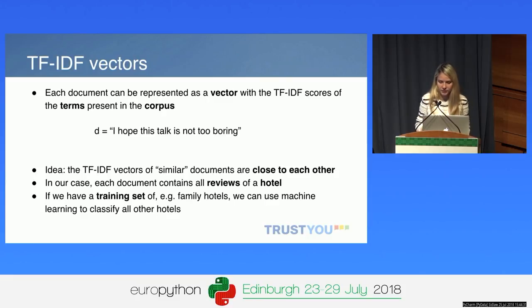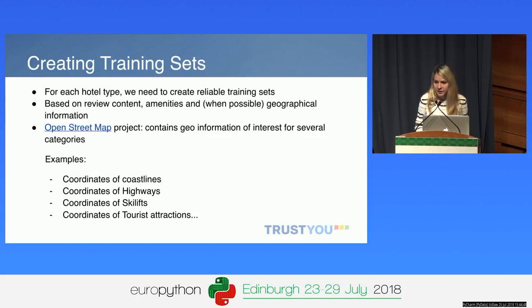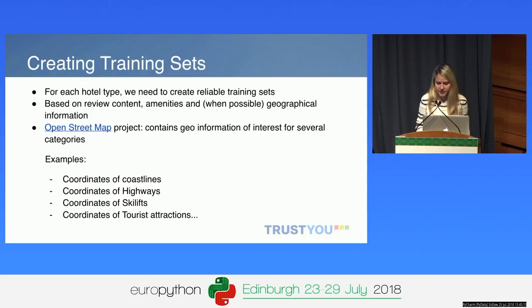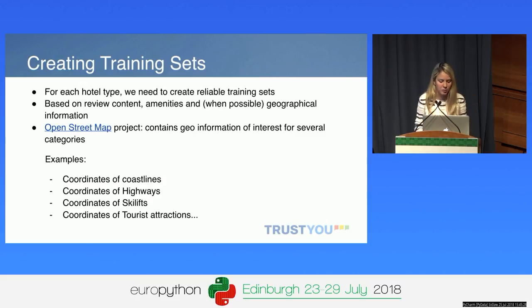The idea is that if we have a training set — a set of hotels for which we know they are of a certain category, for example family hotels — then we can use machine learning algorithms to classify all other hotels and determine whether they are also family hotels or not. Creating training sets is quite important, and we spent quite some time on this, because if you don't have reliable training sets your algorithm won't work well. We built them based on review content, amenities, and geographical information. For this we used OpenStreetMap, which is quite an amazing project — it contains coordinates of coastlines, highways, ski slopes, tourist attractions, golf courses, casinos, really a lot of information.